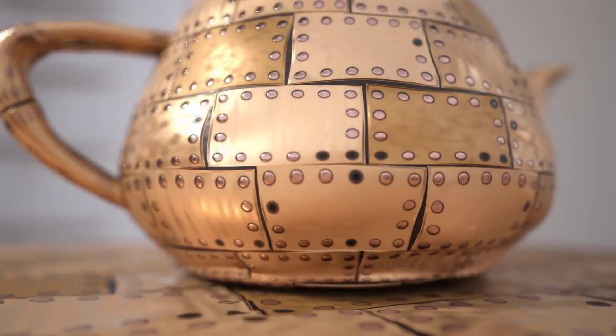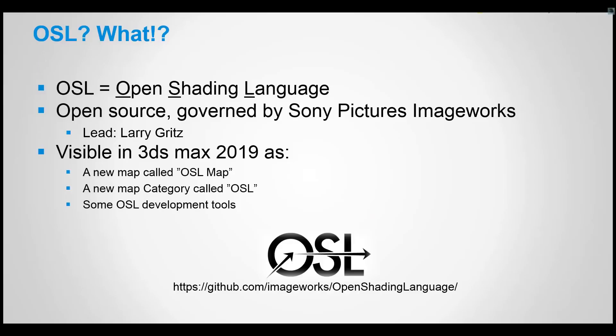Hello everybody, I'm Zap Andersson from Autodesk in the 3ds Max rendering team and today I'm going to talk about OSL — the Open Shading Language. It's an open source project run by Larry Gritz over at Sony Pictures Imageworks, an open source shading language implementation that you can plug into basically any renderer, and we decided to plug it into 3ds Max 2019.